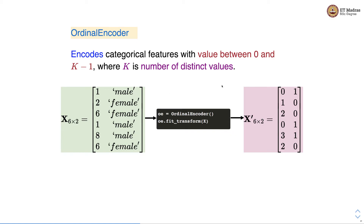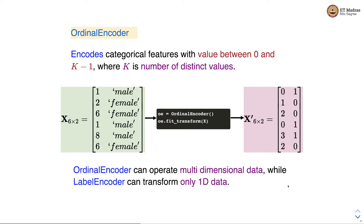For the second column, male is transformed to 1 and female is transformed to 0. Wherever there is gender female, you will see value 0 in the transformed feature matrix. The key difference between ordinal encoder and label encoder is that ordinal encoder can operate on multidimensional data, whereas label encoder can only transform one-dimensional data. So whenever you have multidimensional data and want to do encoding, you can use ordinal encoder.